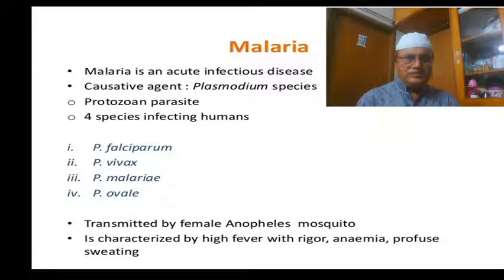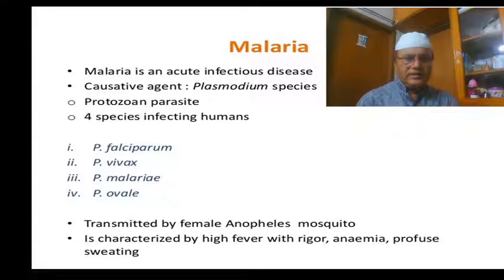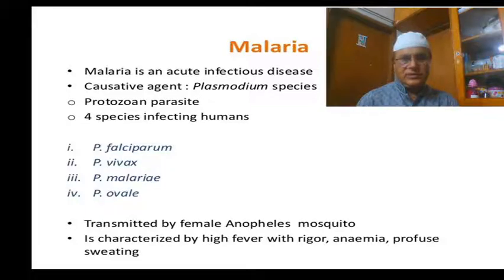Plasmodium falciparum causes malaria in its most severe form. Plasmodium malaria is transmitted by the female Anopheles mosquito. It is characterized by high fever with rigor, anemia, and profuse sweating.